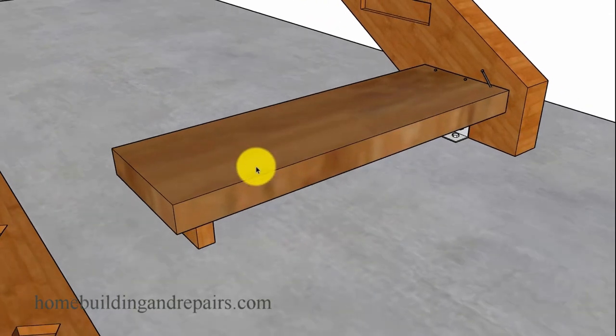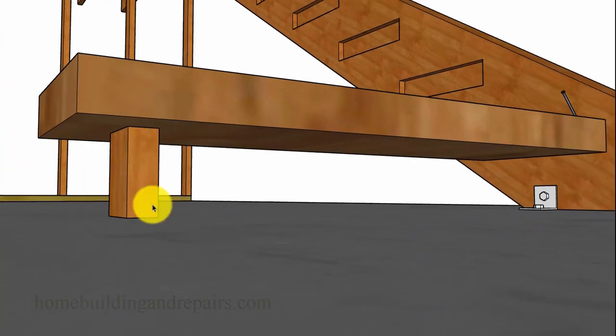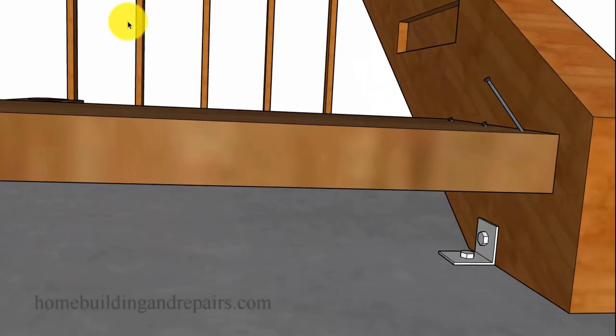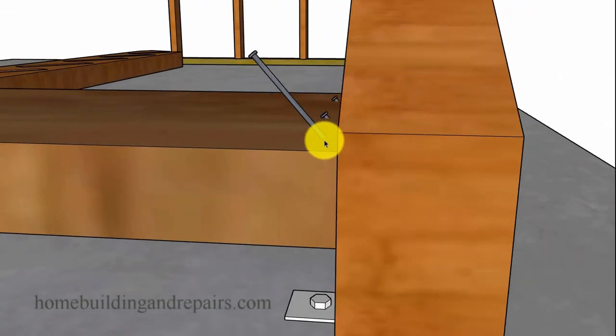And you will need a spacer block. Something to position the tread here into place, keep it from falling down. And this block measurement can be obtained by simply measuring from the bottom of the slot to the top of the floor.